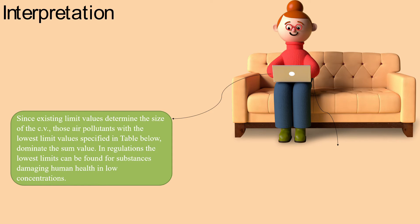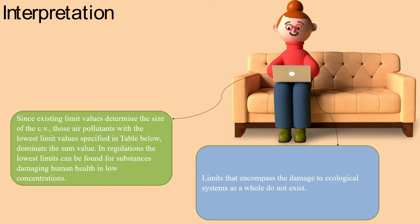Those air pollutants with the lowest limit values, as specified in the table below, dominate the sum value. In regulations, the lowest limits can be found for substances damaging human health in low concentrations. Limits that encompass the damage to ecological systems as a whole do not exist.